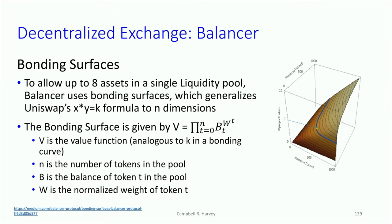This is an innovation that generalizes the initial structure of Uniswap. The formula defines a bonding surface. The formula for Uniswap is a simple bonding curve, but this is a bonding surface. The B values represent the balances of the tokens, and there can be more than two tokens. If there were only two tokens, it would just be token X and token Y — essentially X times Y.